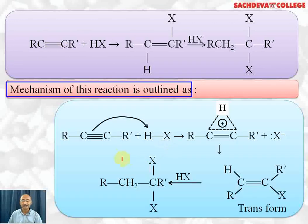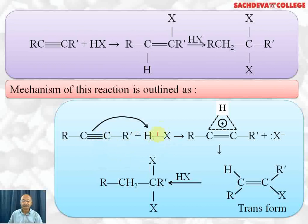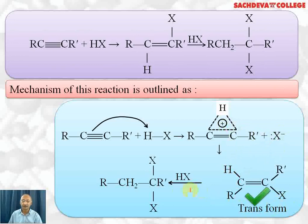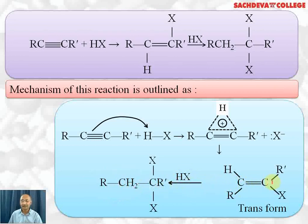The mechanism of this reaction can be outlined as follows. First, HX undergoes heterolytic fission, and H⁺ is attracted toward the pi electrons, forming a cyclic carbonium ion intermediate. This intermediate then reacts with X⁻ from the opposite side, so H attaches on one side and X on the opposite side, giving the trans product. In the next step, HX is added again: H is added to give RCH₂, and X attaches to the adjacent carbon, yielding the dihalogen compound.